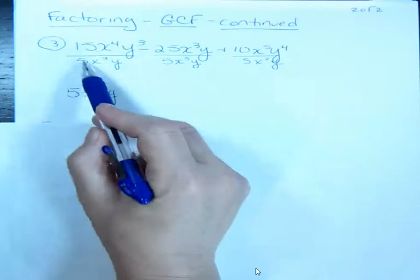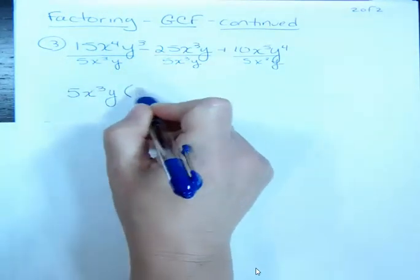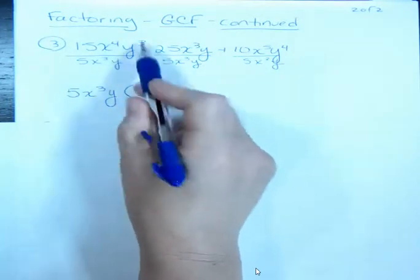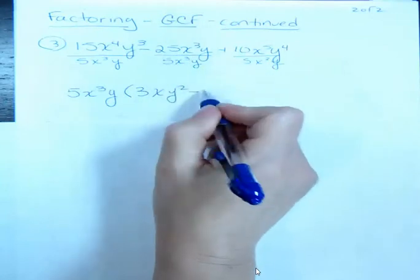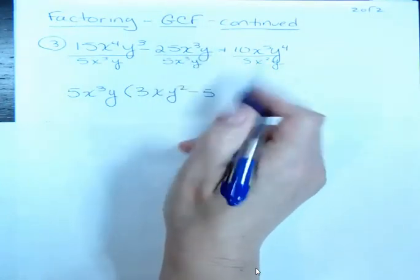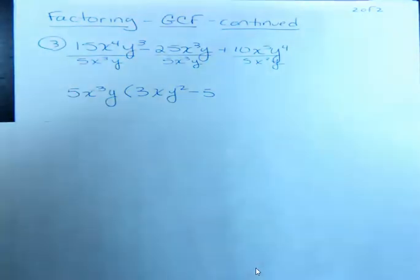15 divided by 5, this is going to go inside the parentheses. That's 3. I have one extra x here, and I have two extra y's. Now I have a minus again, 25 divided by 5 is 5. No x's left, and no y's left. It's just going to be minus 5.